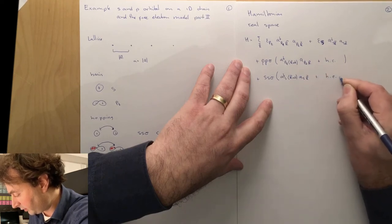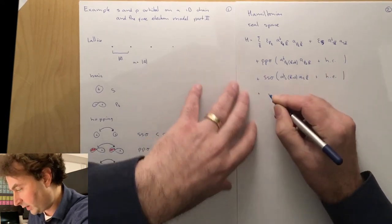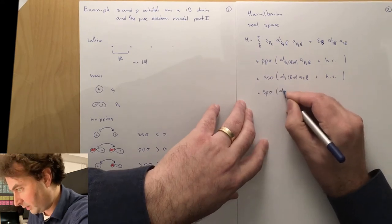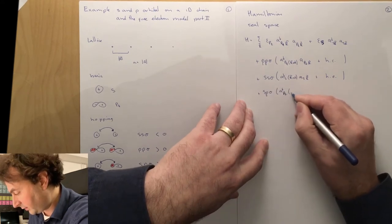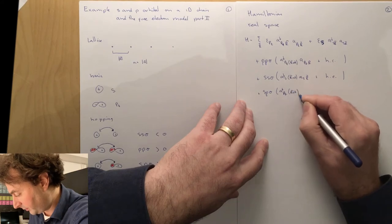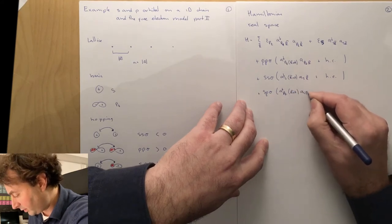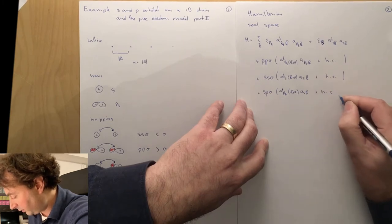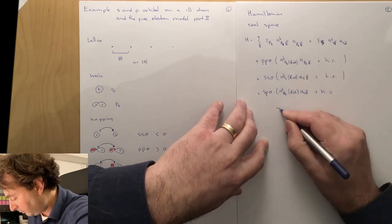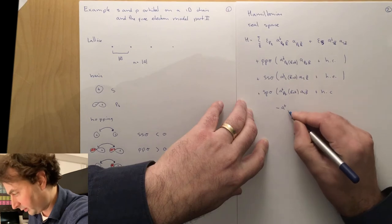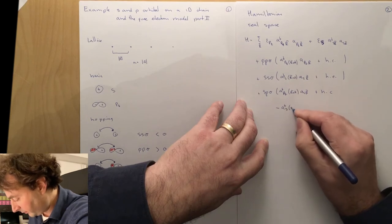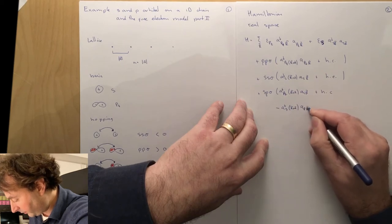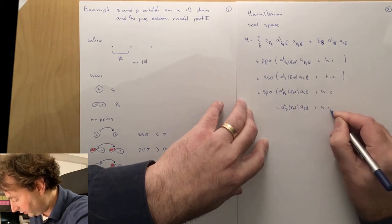We have the hopping for the s orbital: a dagger s at r plus a, as at r, plus the Hermitian conjugate. And we have the hopping between the s and the p orbital: a dagger pz at r plus a, as at r, plus Hermitian conjugate, minus a dagger s at r plus a, apz at r, plus Hermitian conjugate.